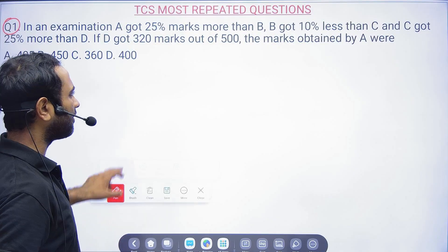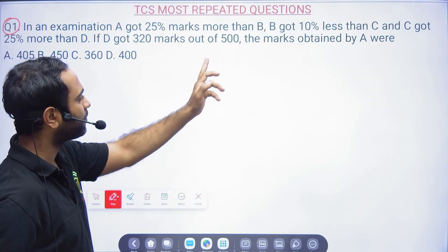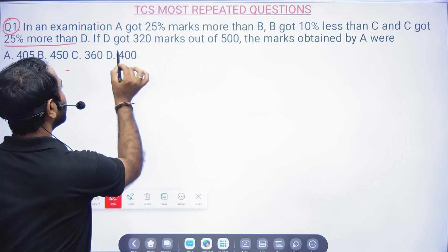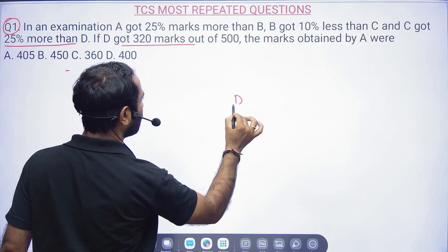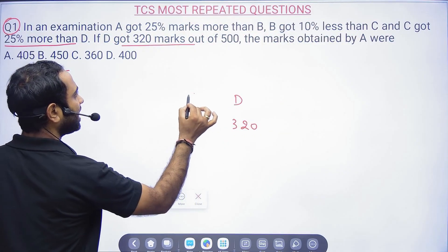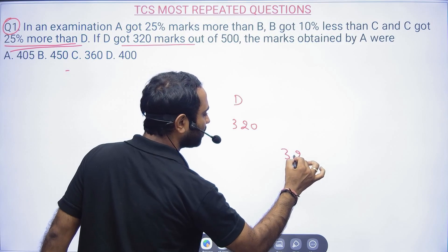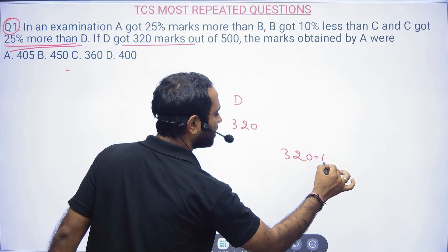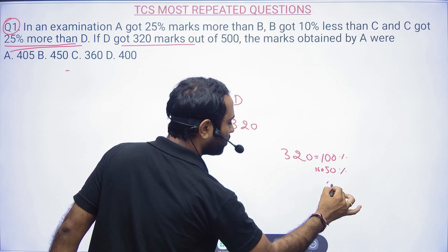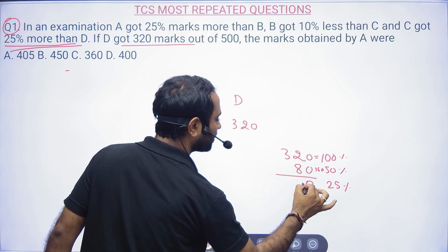Question 1: In an examination, A got 25 marks more than B, B got 10% less than C, C got 25% more than D. If D got 320 out of 500 — D is getting 320, which is 100%. 50% of 320 is 160, and 25% is half of 160, which is 80. So C = 320 + 80 = 400.